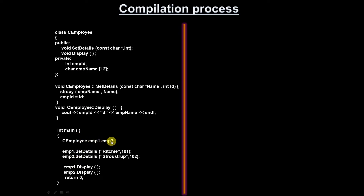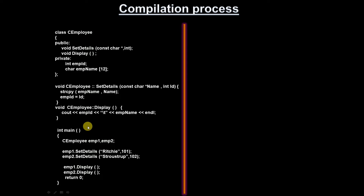How much memory will be allocated for employee1 and employee2? The total size is based on non-static data members: int employee ID is 4 bytes, and employee name array is 12 bytes, so 4 plus 12 equals 16 bytes each. Where it is allocated depends on where you create the object — locally means stack, globally means data segment, and using heap allocation means heap.